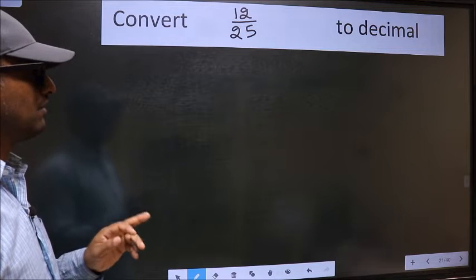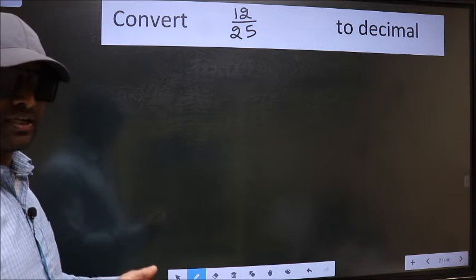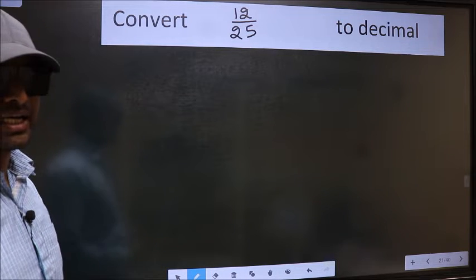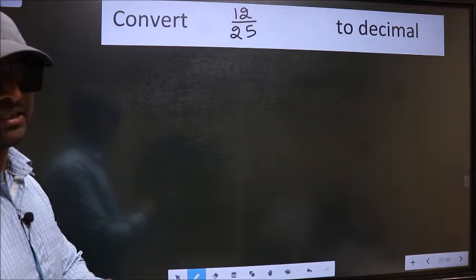Convert 12 by 25 to decimal. To convert to decimal, we should divide it. To divide, we should frame it in this way.